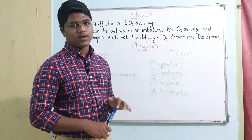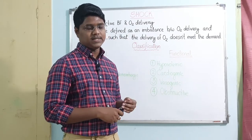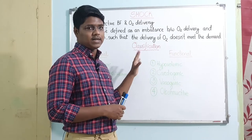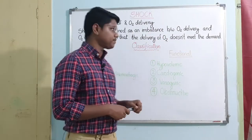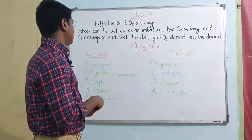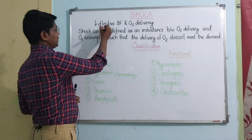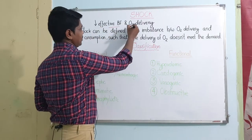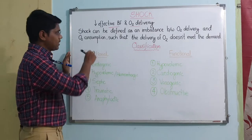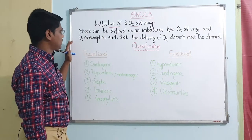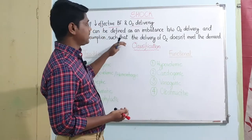Today we will be learning one of the most important chapters: shock and fluid therapy. In this class we will discuss shock, its pathophysiology, and its classification. First of all, what does shock mean? There is a decrease in effective blood flow and also a decrease in oxygen delivery. Shock can be defined as an imbalance between oxygen delivery and oxygen consumption, such that the delivery of oxygen does not meet the demand by the tissues.